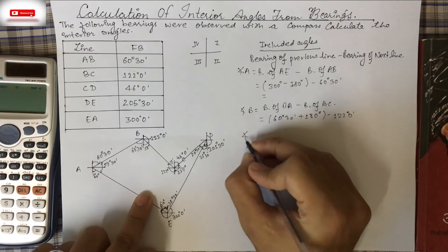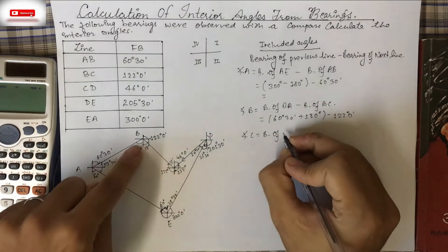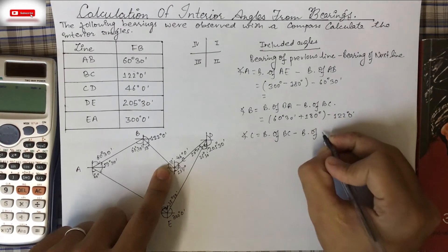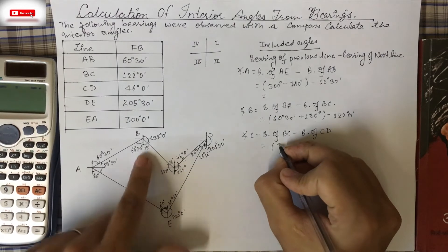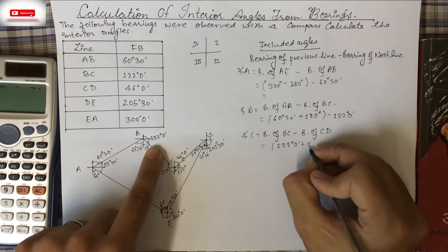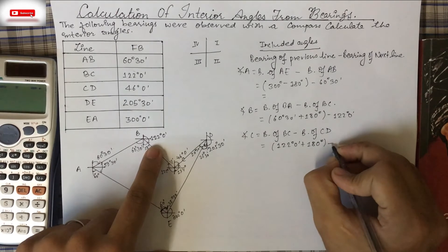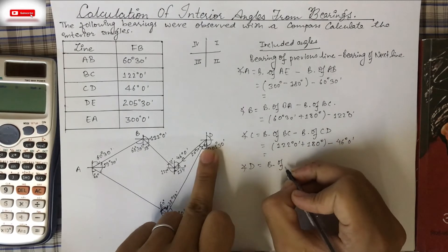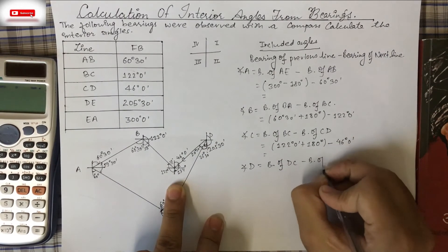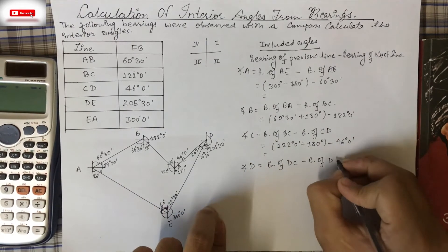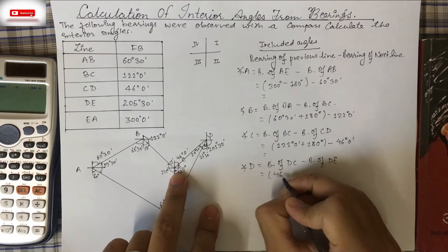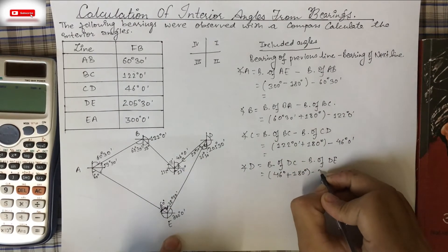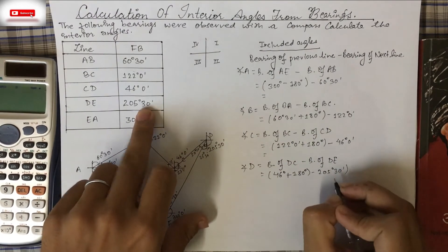For angle C: bearing of CB minus bearing of CD = (122°0' + 180°) − 46°0'. For angle D: bearing of DC minus bearing of DE = (46°0' + 180°) − 205°30'.